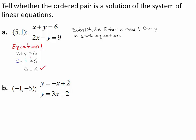Because 6 equals 6 is always true, the ordered pair 5, 1 is a solution of equation 1. Next, write the second equation: 2x minus y equals 9.